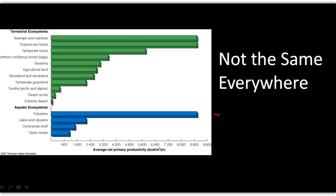Looking at productivity in different locations, you can see that something we probably knew ahead of time is that tropical rainforests are very, very productive. Right along with them are things like swamps, which are usually found in fairly warm locations and are also very productive — though not a place you probably want to spend a lot of time. We happen to live in a very productive location — a temperate forest.